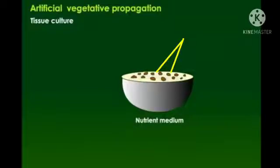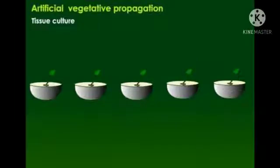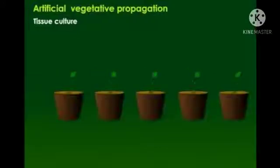The small pieces of these callus are kept in different nutrient mediums containing plant growth substances. Then callus multiplies and develops into small new plantlets. After adequate growth, these plantlets are transferred to moist soil for further growth.